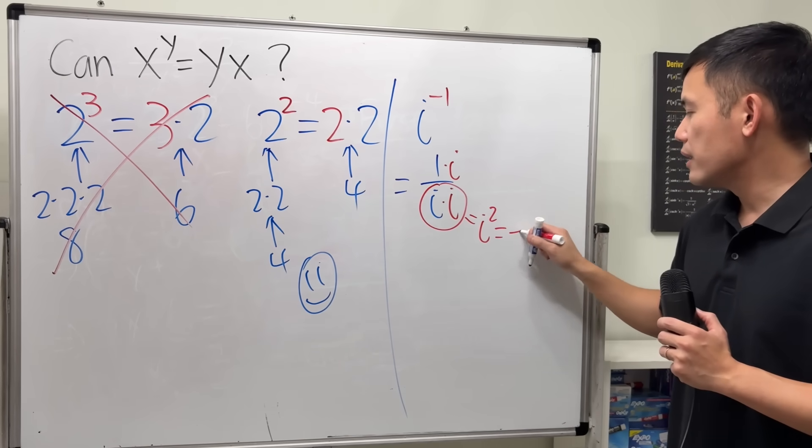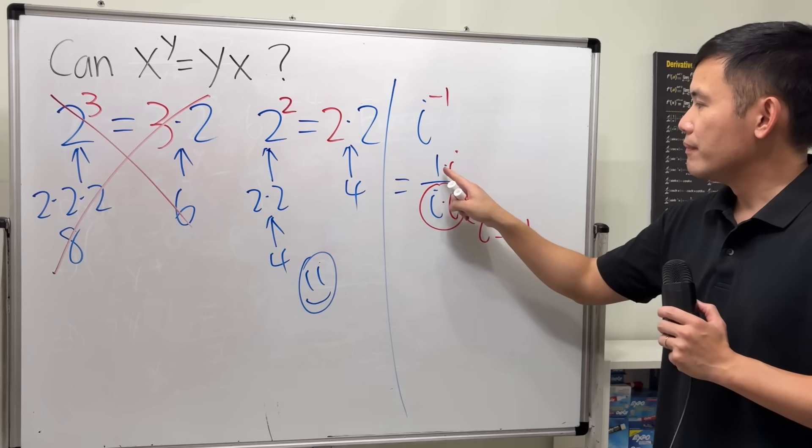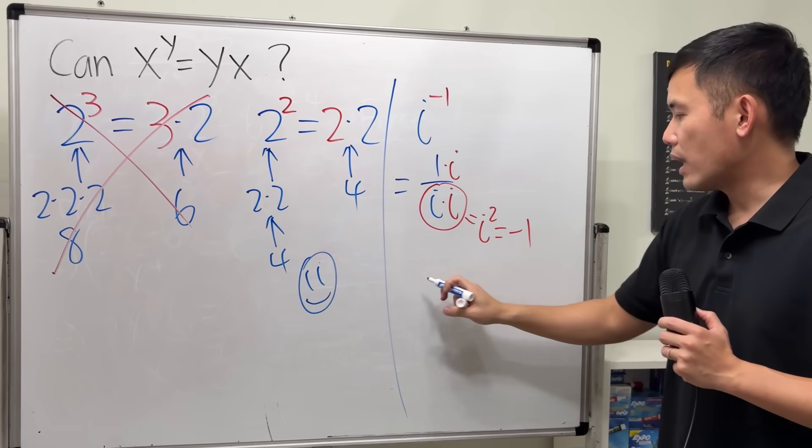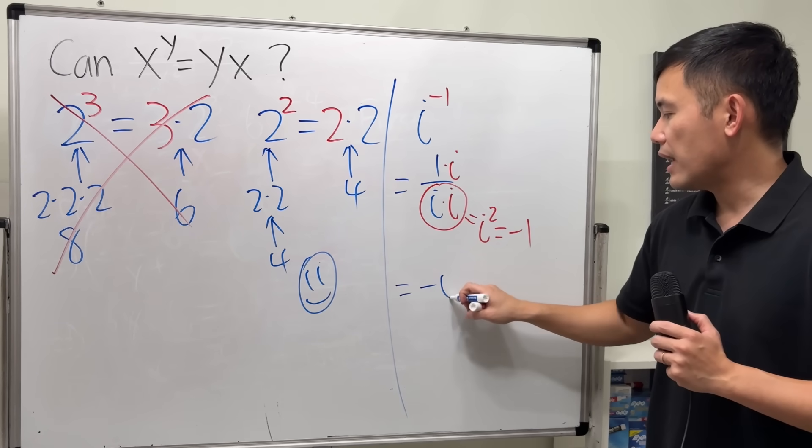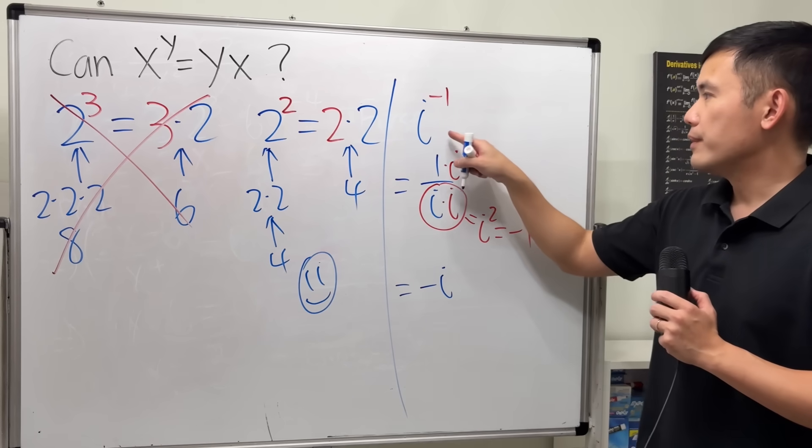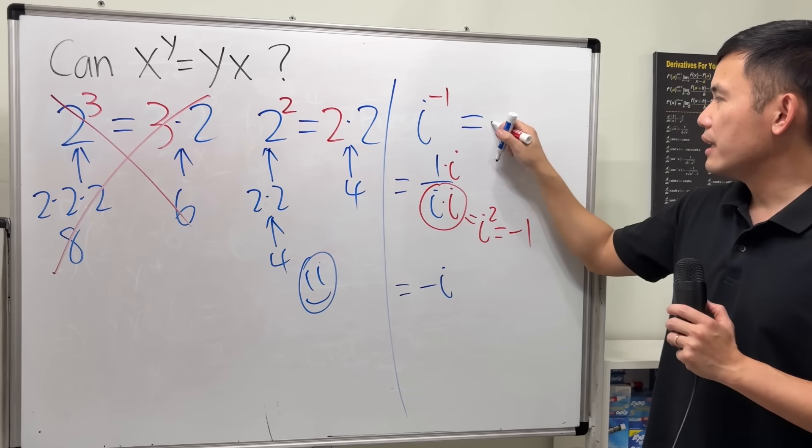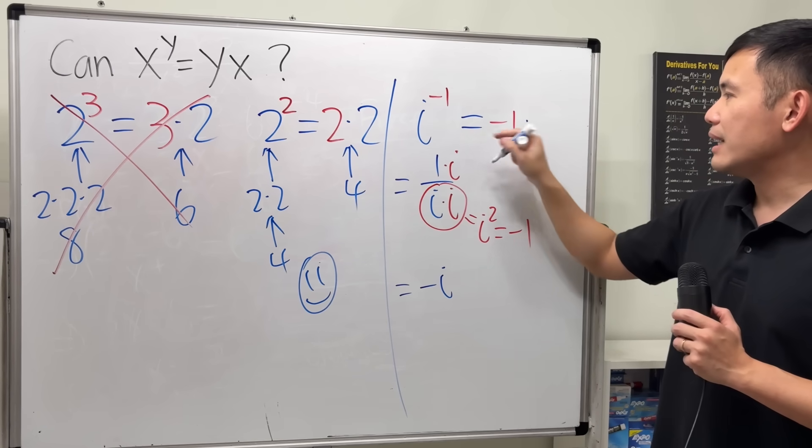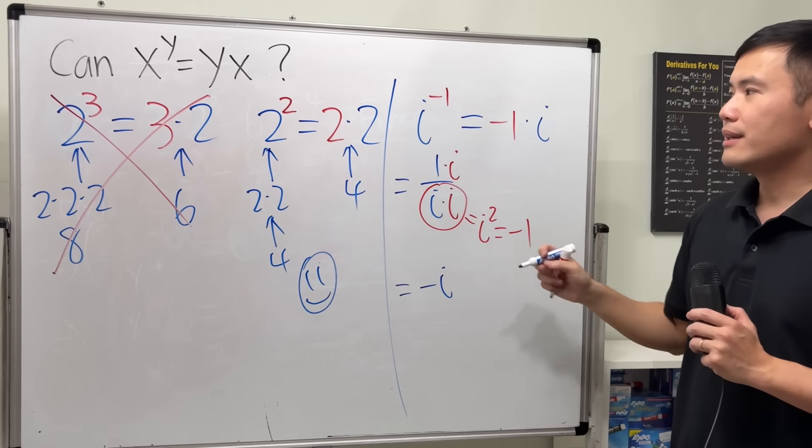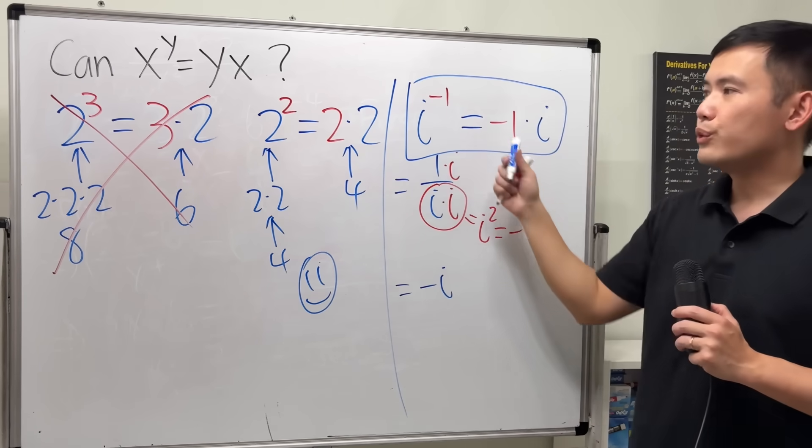and by definition, that is negative 1. 1 times i is just i. i over negative 1, that gives us negative i. So, as you can see, when we have i to the negative 1, this is the same as negative 1 times the base, i. And I think this is really, really cool.